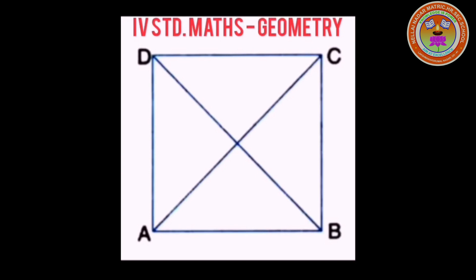In this diagram, we have 4 sides and it is closed — so it is a quadrilateral. The sides are AB, BC, CD, and DA. In this figure, 2 diagonals are there. A diagonal means the joining of 2 opposite points. If you join point A and its opposite point C with a line segment, that is called a diagonal. The other diagonal is BD.